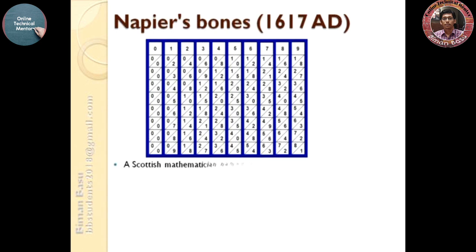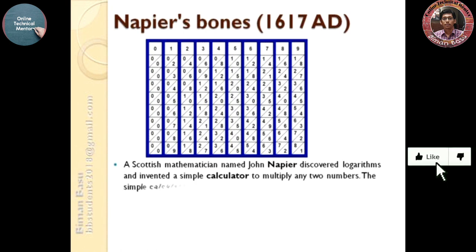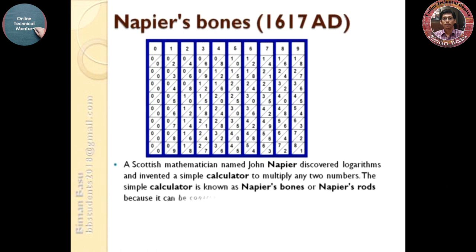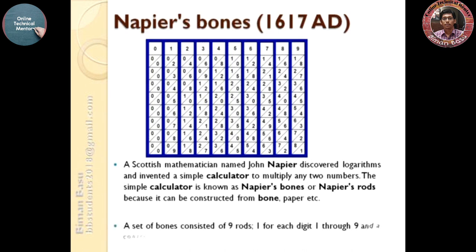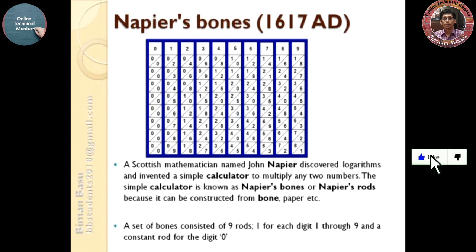A Scottish mathematician named John Napier discovered logarithms and invented a simple calculator to multiply any two numbers. This simple calculator is known as Napier's Bones or Napier's Rods, because it can be constructed from bone, paper, etc. A set of bones consisted of nine rods, one for each digit one through nine, and a constant rod for the digit zero.